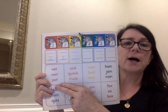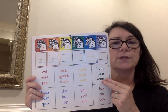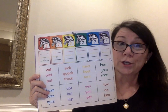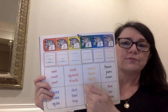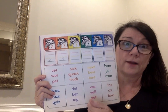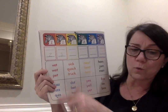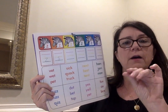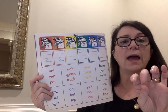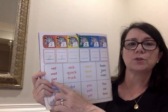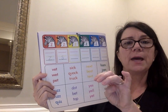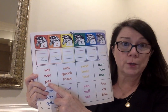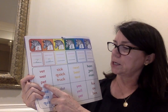Now we're going to move down to the boxes. This is another listening game. You'll notice there are several words in each box. I'm going to give you a word and you have to circle the word that I give you. In the first one we have some red words: vet, wet, pet. I want you to read the words and circle the word wet.